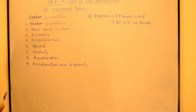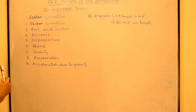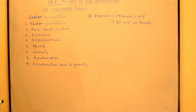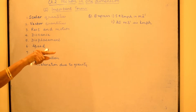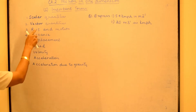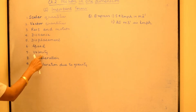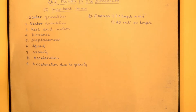Then we come to vector quantities. How are vector quantities different from scalar? Just like scalar, they do have magnitude, but they will have direction also. For example, if we are talking about force — when a force is applied on any body, that body will have the force applied in a particular direction. You cannot say one Newton force but not know in which direction. So force, acceleration, displacement, and velocity — all these quantities will be vector quantities.